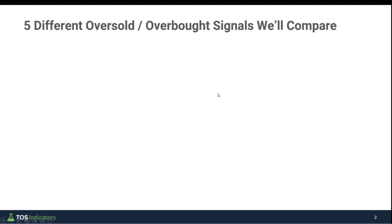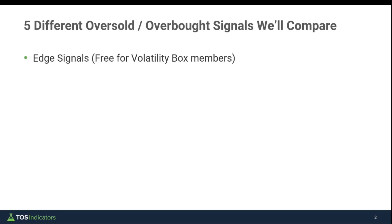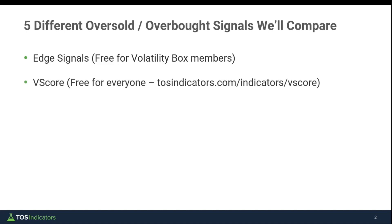The five indicators we'll compare are: first, the Edge Signals indicator, which is free for all Volatility Box members. This is the only indicator we'll talk about that's not freely available for you to test yourself. The Edge Signals is comprised of the Dynamic RSI along with the Wada Atara indicator, and I think is our secret sauce in trying to capture reversal zones. You'll see this on our chart with green and red arrows.